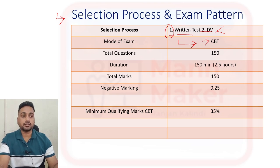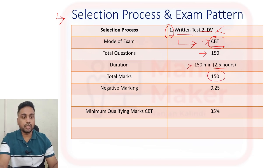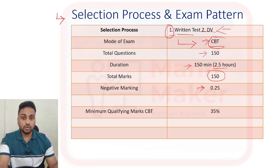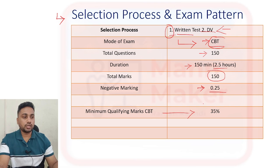In the CBT you are going to get 150 questions and 150 minutes — that is 2.5 hours — and the total marks is 150. For each question you get one mark, and for negative marking, for each wrong answer they will deduct 0.25 marks. So negative marking is also there, keep this in mind.